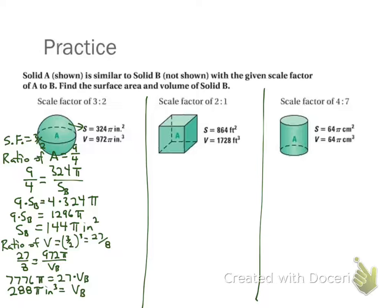Now we go on to the next one. Scale factor is 2 over 1. So my ratio of my areas is 2 over 1 squared, which is 4 over 1. So now I'd say 4 over 1 equals the surface area of A over the surface area of B. Now this one turns out to be 4 times the surface area of B equals 864, which I can divide 864 by 4 and get 216 feet squared.